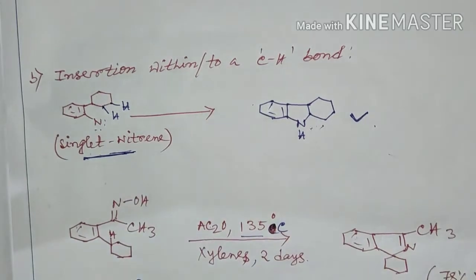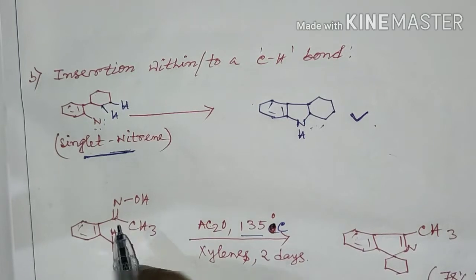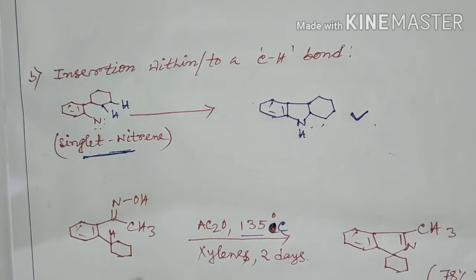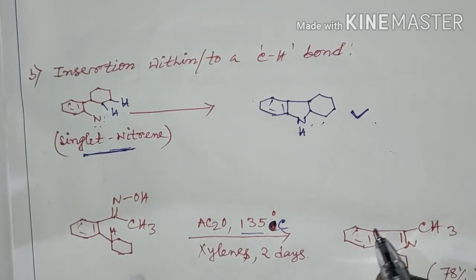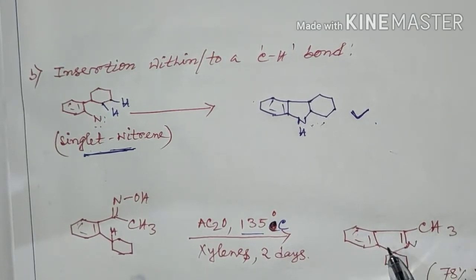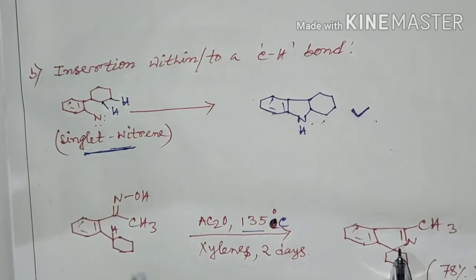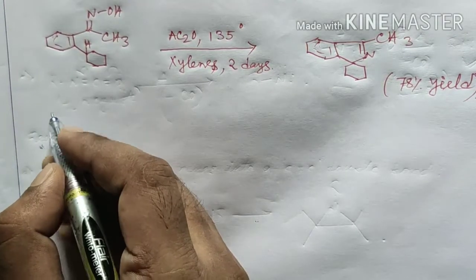If a hydroxyl amino oxime is heated in the presence of acetic anhydride at 135°C in xylene solvent, a cyclic product is obtained. Let's see the mechanism to understand how this reaction proceeds through a nitrene intermediate.